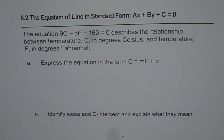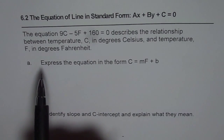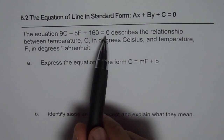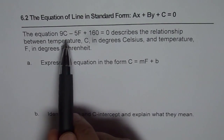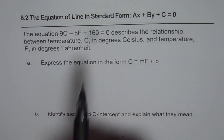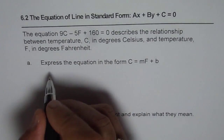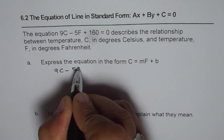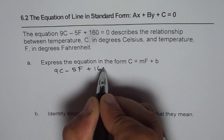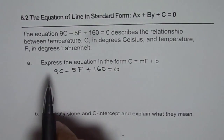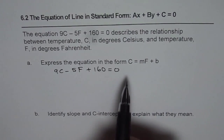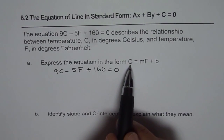You can pause the video, answer, and then look at my suggestion. Let's begin by rearranging the given equation which relates temperatures in Celsius and degrees Fahrenheit. We have the equation 9C minus 5F plus 160 equals 0. We need to express this in the form C equals MF plus B, which means we need to isolate C.